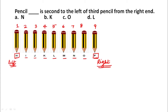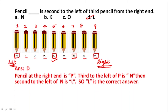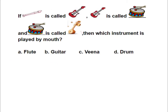We have to find out which pencil is second to the left of this third pencil from the right end, or second to the left of N. First to the left of N is M, and second to the left of N is L. So the correct answer for this question is option D, L. To solve such questions you need to know which is your right hand side and which is your left hand side — if you know that, it is very easy to solve such questions.